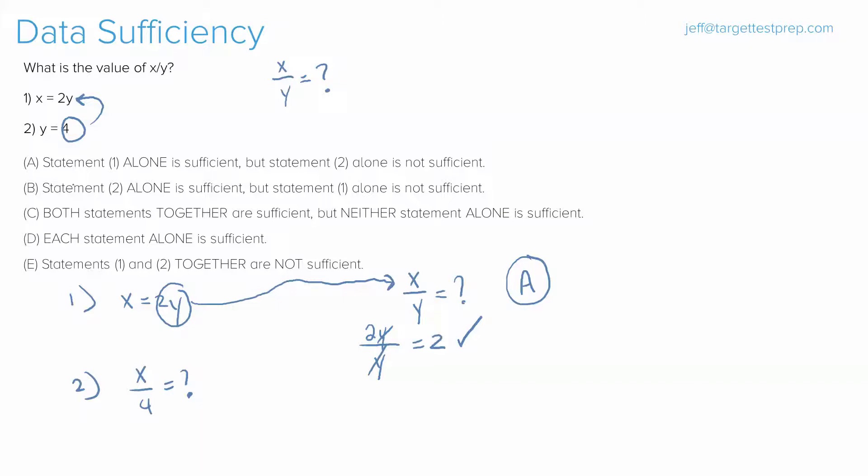So, the minute that you see that the answer could be C without you doing any work, you want to stop yourself, and you want to say, wait a minute. Is that really the answer? And if we look at it that way, think about all the answer choices we have in data sufficiency. We have A, we have B, we have C, we have D, and we have E. So, if we're taking this approach, and we say, all right, the trap answer here is definitely C. There's no way the GMAT is just going to give me x equals 2y, give me y is 4, and say, yeah, that's what we need to solve.